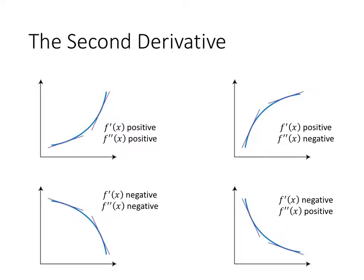Finally, if f prime of x is negative again, that means my function is decreasing. But if f double prime of x is positive, that means those negative slopes are increasing — they're moving up towards zero. So my tangent lines are getting less steep as I go from left to right.